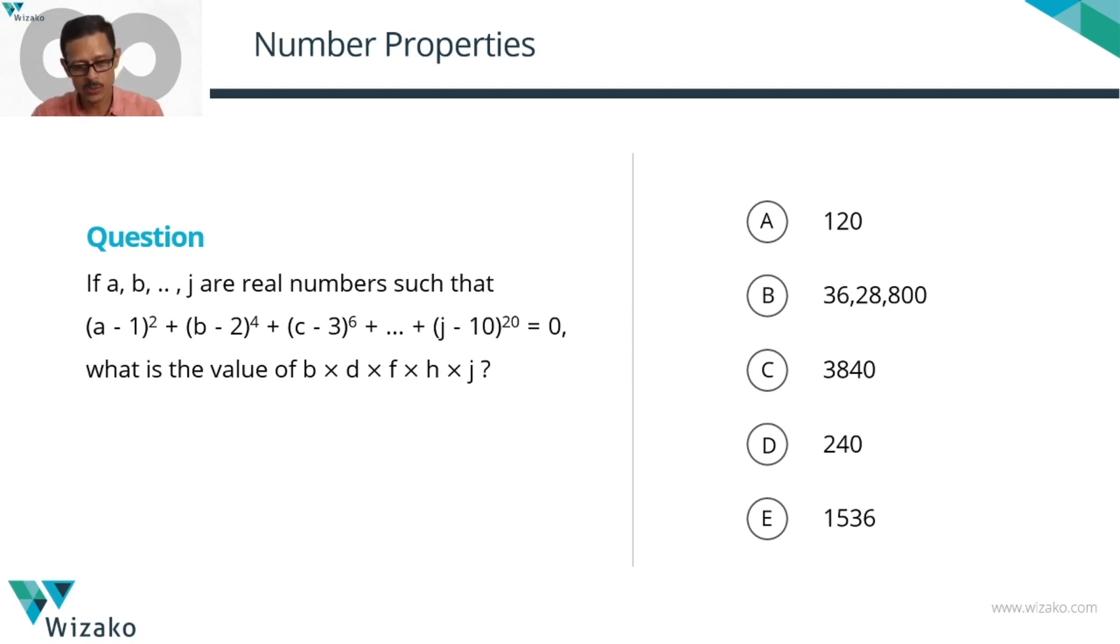If a, b, all the way up to j are real numbers such that (a - 1)² + (b - 2)⁴ + (c - 3)⁶ all the way up to (j - 10)²⁰, if the summation equals 0, what is the value of b × d × f × h × j?